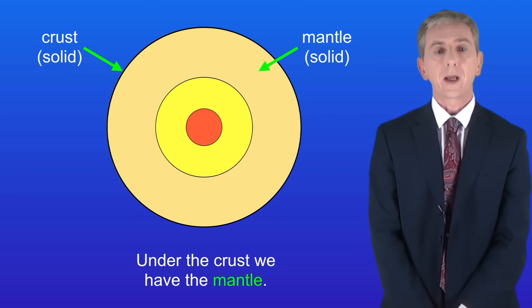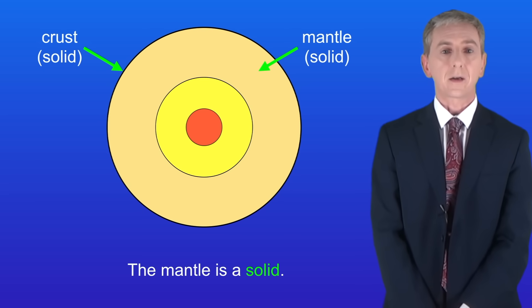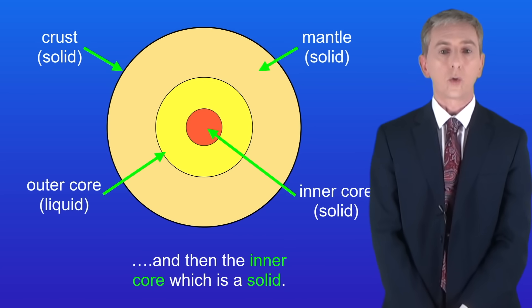Under the crust we have the mantle and the mantle is a solid. Now I should point out that parts of the upper mantle can flow very slowly but we still consider the mantle to be a solid. We then have the outer core which is a liquid and then the inner core which is a solid.